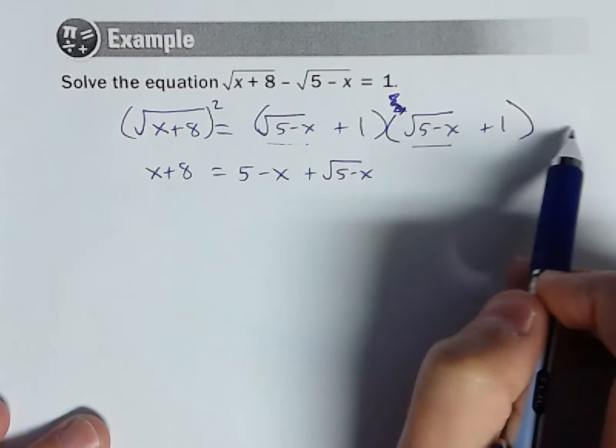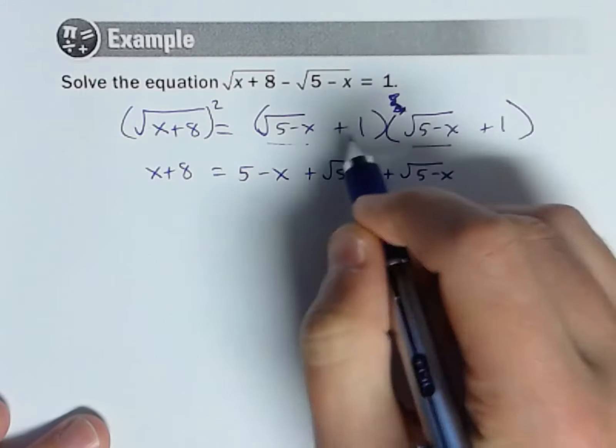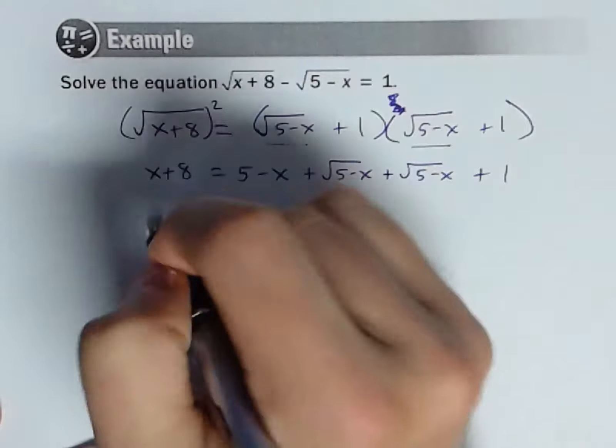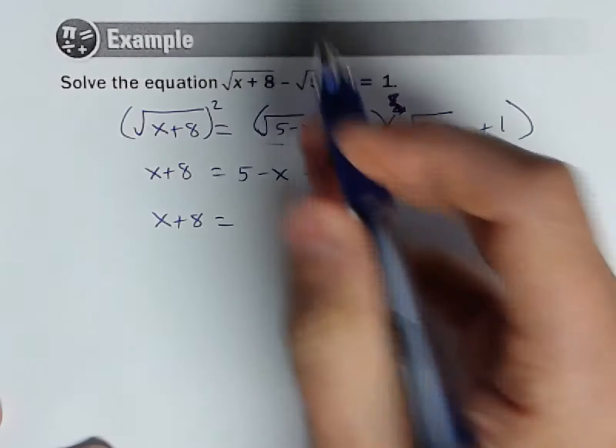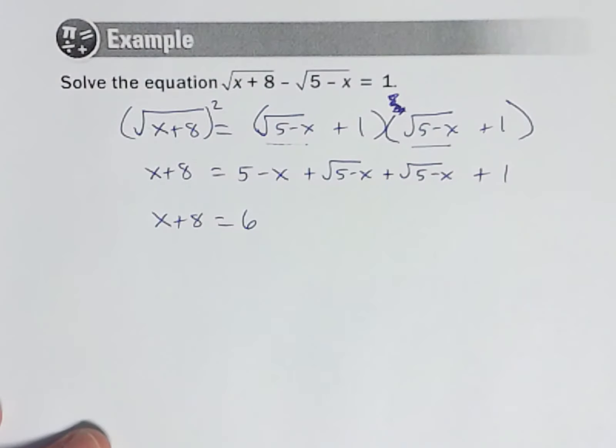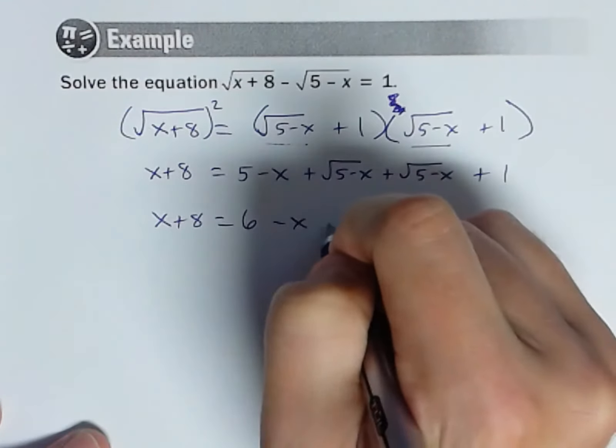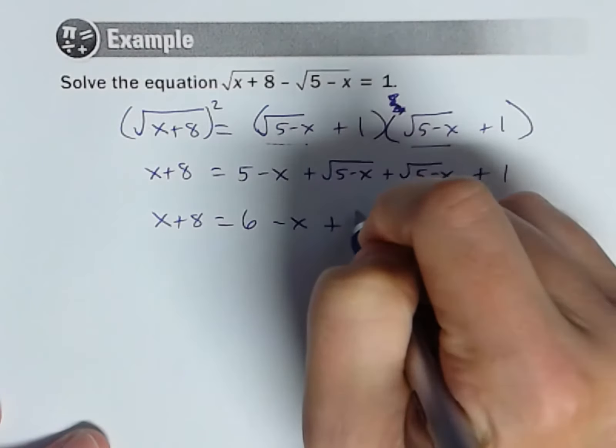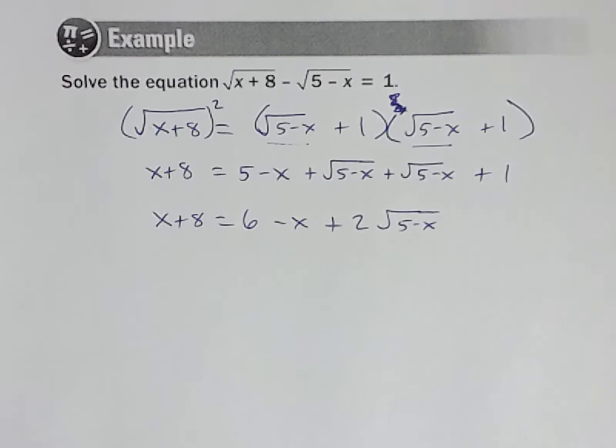Now let's distribute this 1 through. So 1 times this, I get that radical again, and then 1 times 1. All right, let me just clean that up. So x plus 8 equals 5 and 1 are common, so like terms, and we've got a minus x, and we've got plus 2 of these guys. So 2 square root of 5 minus x. Now it's a little uglier than that last one.